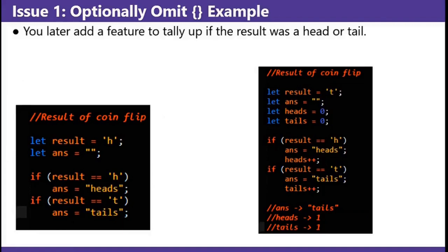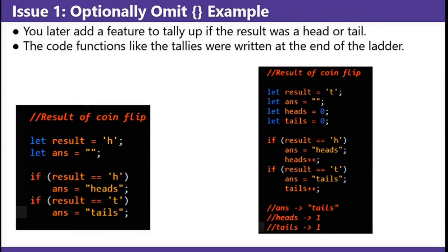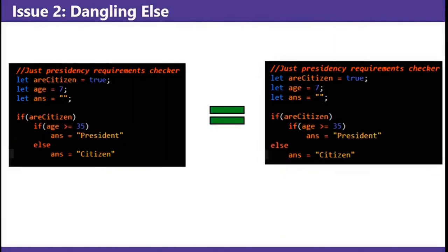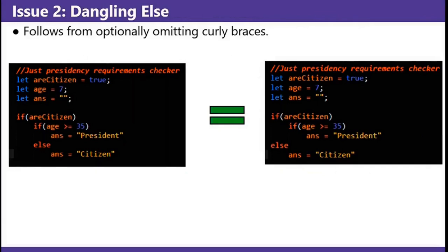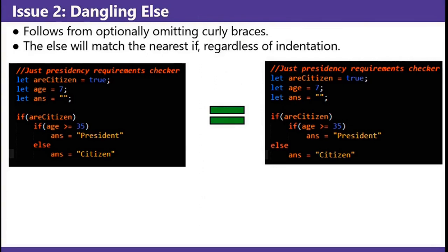An example: on the left it's your coin flipping example, and on the right you add a tally — if you flip heads you increment the heads value, and if you flip tails you increment the tails value. This code on the right functions like the tallies were written at the end of the ladder, as regardless of what you flipped, both values get incremented. Issue number two is the dangling else, and this follows from optionally omitting curly braces. The else will match the nearest if regardless of the indentation. Like the left and right examples — they're the same code, but regardless of the indentation, that else always matches with the 'if age is greater than or equal to 35'. Seriously, just use the curly brace.